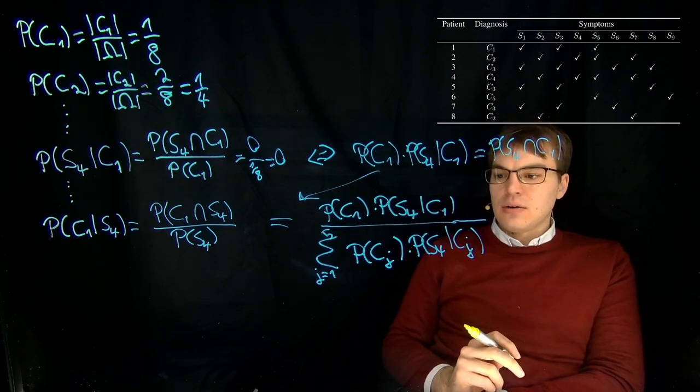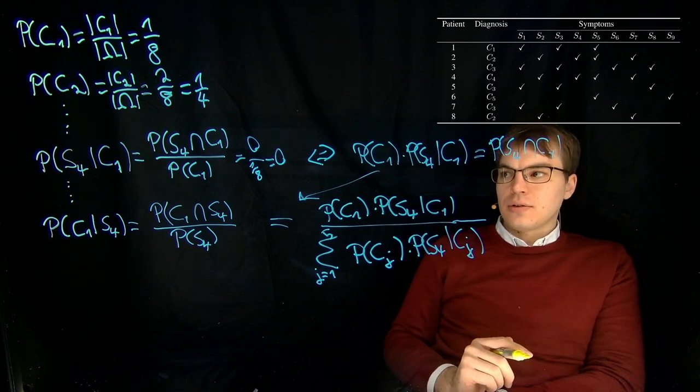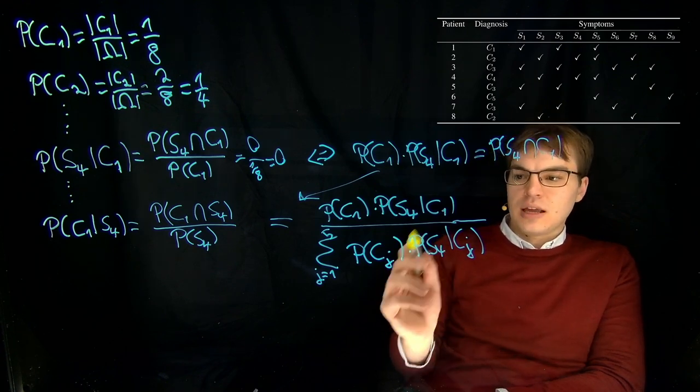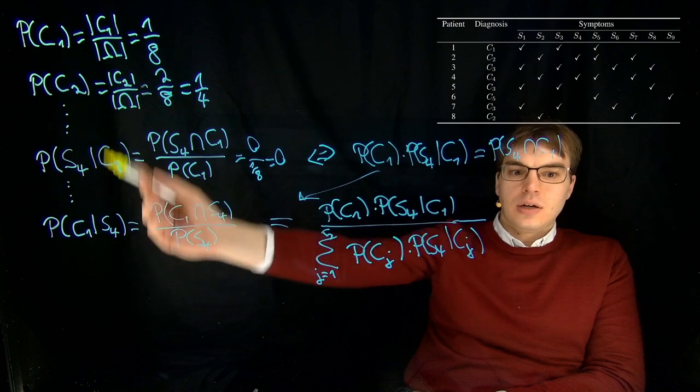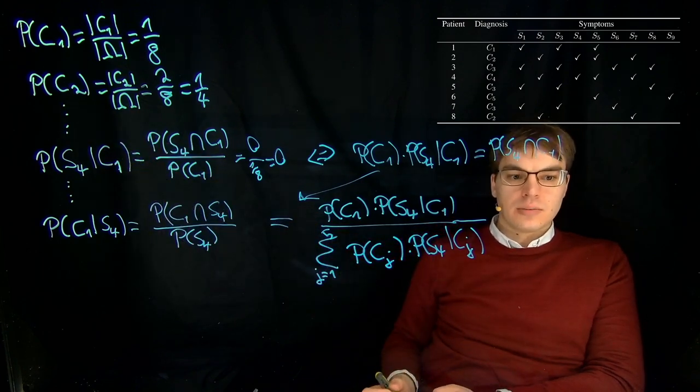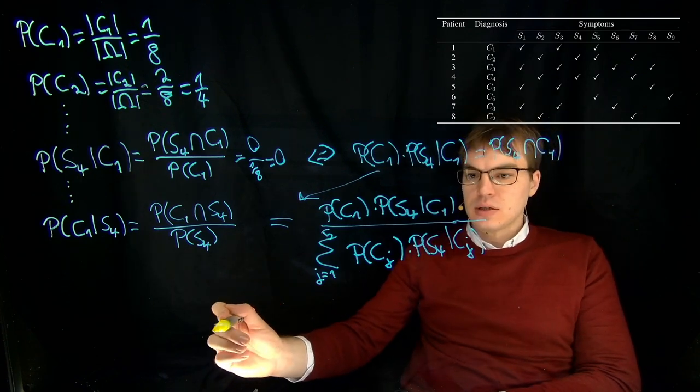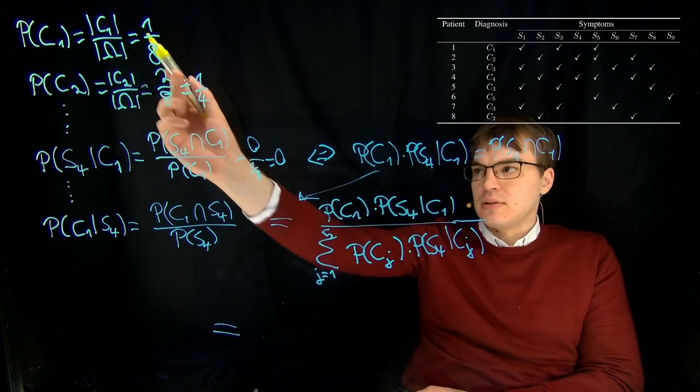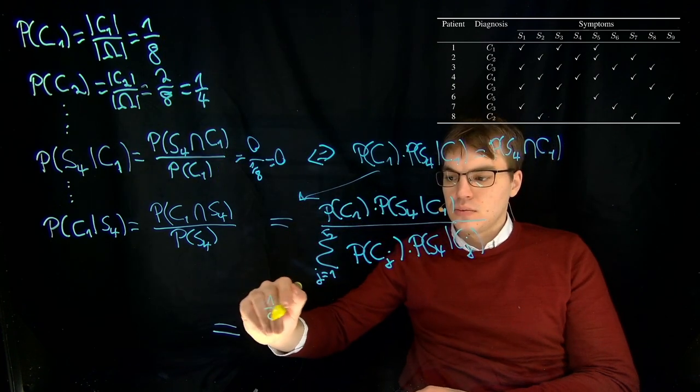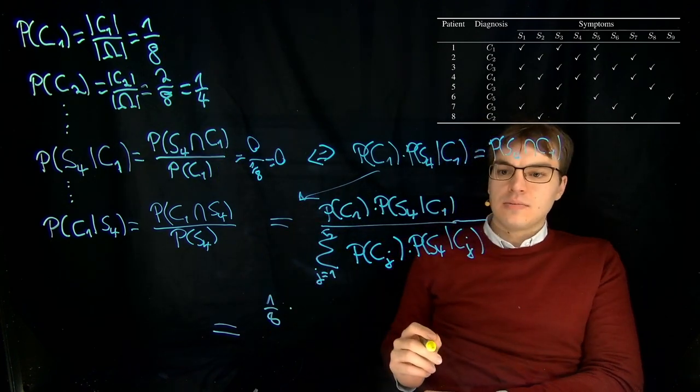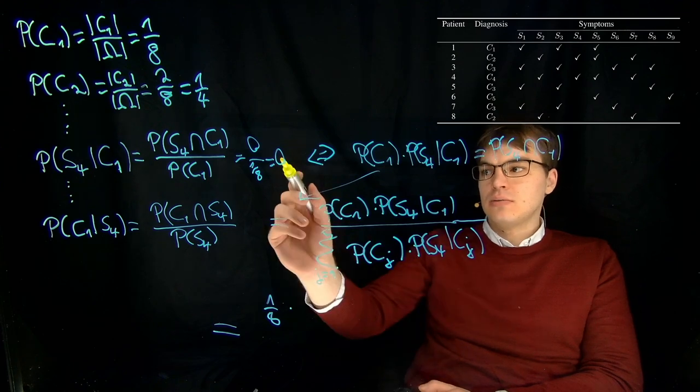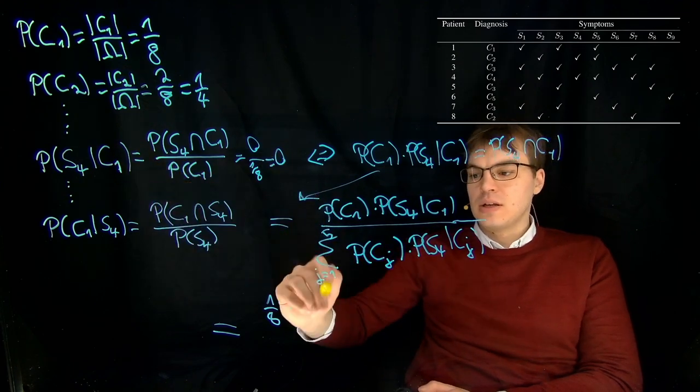And the key now is that we, for all those terms, have values given in the computations above. So we can just fill this in. So let me quickly do this. This over here, probability of C1 is one eighth times zero because this term over here is zero.